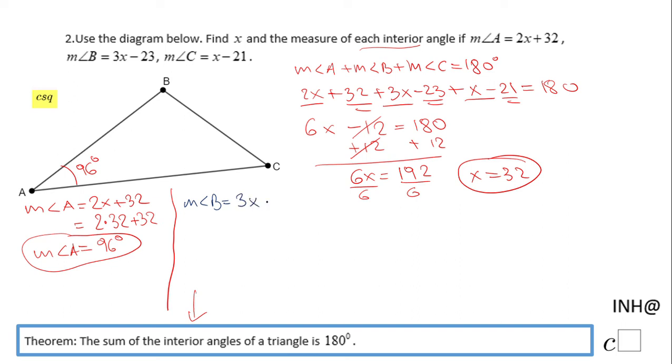And here we have three times 32 - x is 32 - minus 23. And if we evaluate this expression, we are going to end up with 73°. The measure of angle B is 73°.